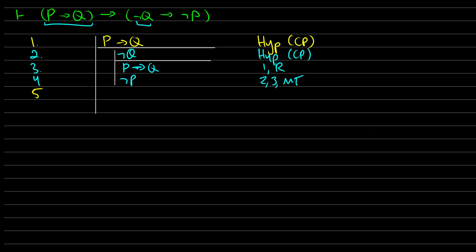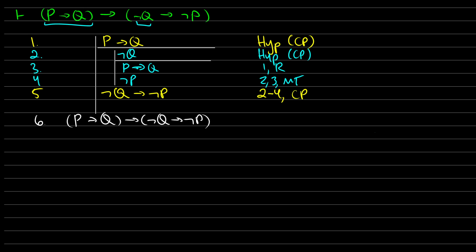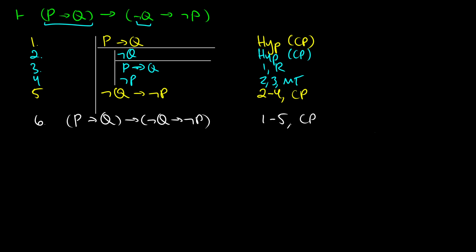We assumed ¬Q and got ¬P, therefore we have ¬Q→¬P, from lines two to four — a conditional proof. Then in line six, we assumed P→Q and got ¬Q→¬P, so we use conditional proof to conclude (P→Q)→(¬Q→¬P), from lines one to five — conditional proof. That is the proof of (P→Q)→(¬Q→¬P).